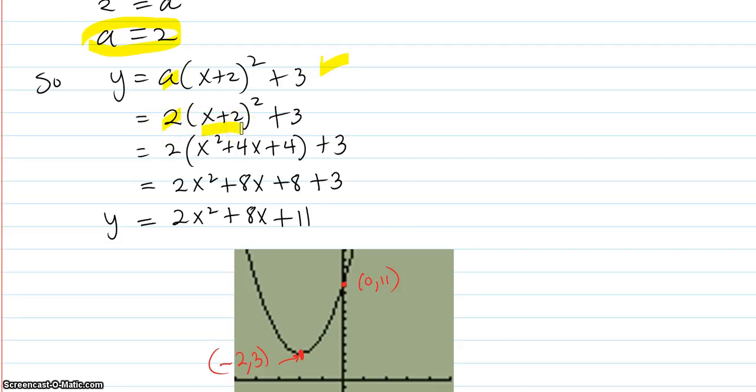Square this out. This is where it's really advantageous to know the squaring out method for a binomial. It's the first squared, plus multiply it together and double it, 4x, plus the square of the last is 4. And you have your 3.